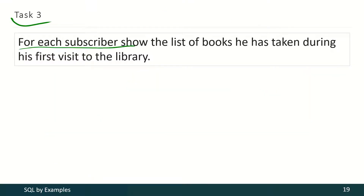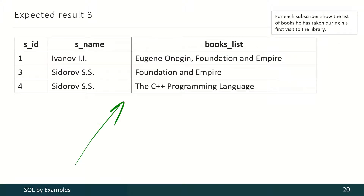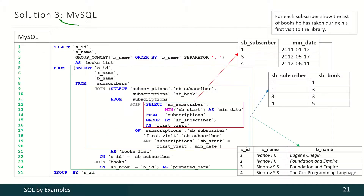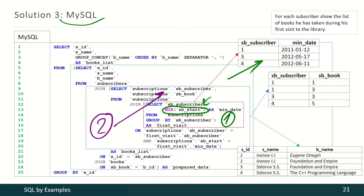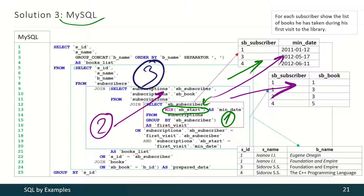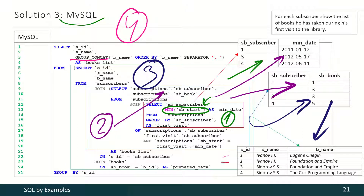In the third task we have to show, for each subscriber, the list of books he took during his first visit to the library. Notice that we need to use some functions to transform several rows in a column into one single row. For MySQL, on the innermost query we look for the minimal value of the subscription start date for each subscriber. Then we produce the list of books taken during that first visit, transform those IDs into book titles, and finally use a function to eliminate line duplication and place values after a comma. That's our final result.